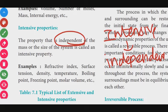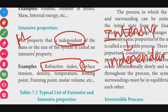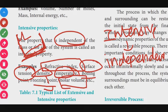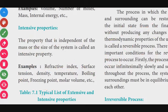An intensive property is independent of mass and size of the system. Examples include refractive index (mu), surface tension, temperature, boiling point, freezing point, and molar volume. These properties remain constant regardless of the amount of substance.